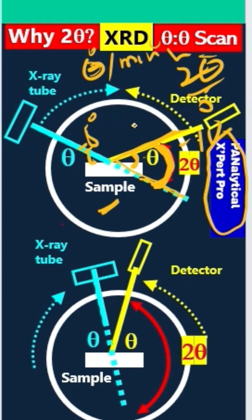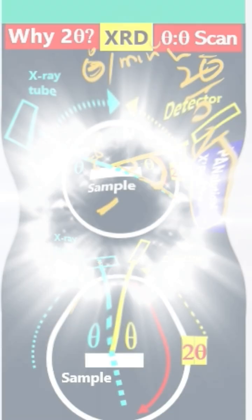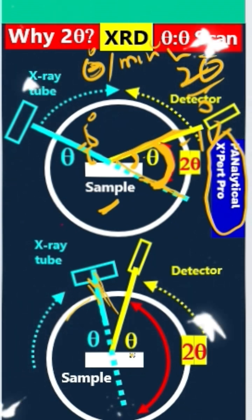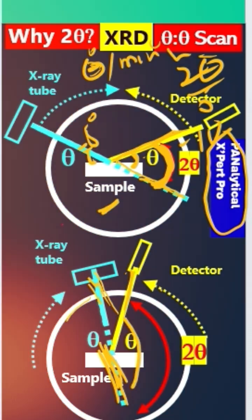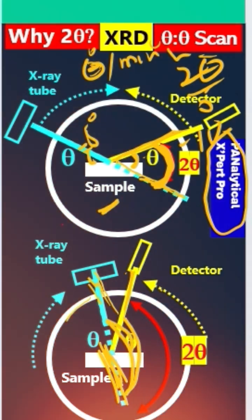You see here — when the XRD tube rotates and reaches this position, the transmitted ray is in this direction. The detector is also rotating at the same rate and reaches the same position. So this total angle is now my two-theta.